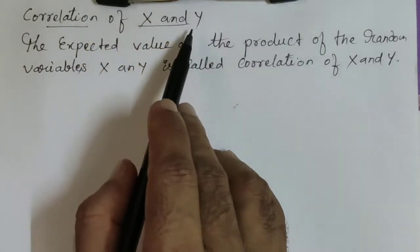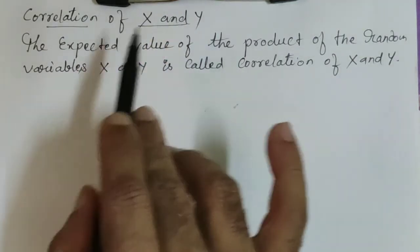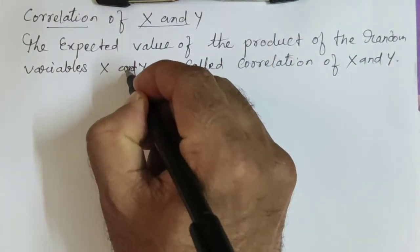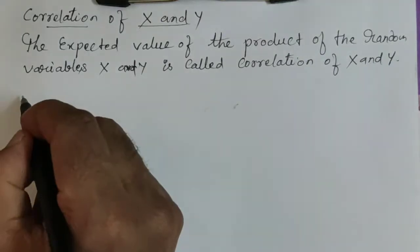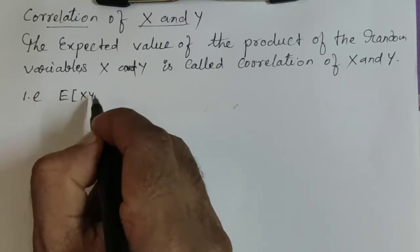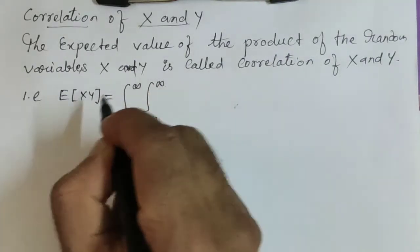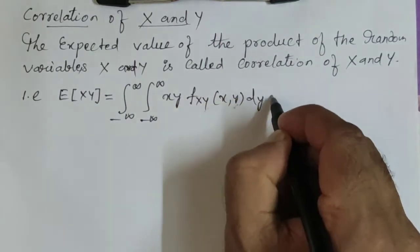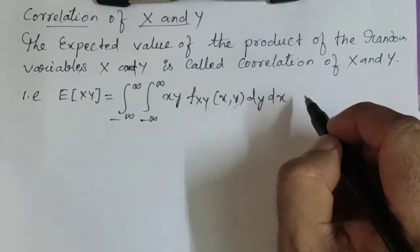The next concept is correlation of X and Y. The correlation of X and Y is the expected value of the product of the random variables X and Y. E[XY] equals the double integral from minus infinity to plus infinity of x·y times the joint density function dy dx. This is known as the correlation of the random variables X and Y.